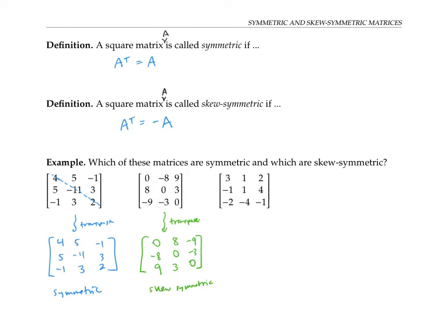Once again, it's useful to think about the diagonal. Notice that all the entries above the diagonal, if we flip them across the diagonal, they line up with their negatives on the other side. Notice also that we have zeros all along the diagonal. If a matrix is skew symmetric, it has to have zeros on its diagonal, because when we take the transpose, the entries on the diagonal stay where they are, and the only way an entry can be its own negative is if it's zero.